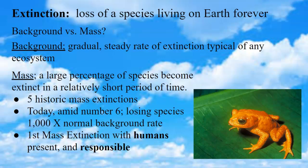Today, we are losing species at a thousand times faster than normal background extinction would occur, which tells us that we're in the midst of the sixth mass extinction. The only difference between those past mass extinctions and today's is the existence of humans. Humans weren't around for the other five, but we are currently present and largely responsible for this current mass extinction.